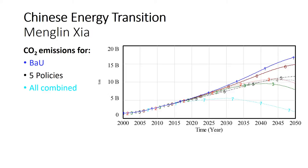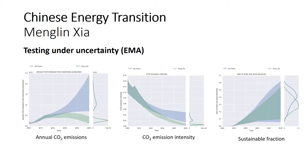He then performed an uncertainty analysis using the EMA Workbench. For each uncertain parameter he set a range of expected values and ran a large number of simulations. The annual CO2 emissions on the left are quite uncertain without policies, but can be reduced with some certainty when policies are applied. The same holds for CO2 emission intensity. On the right, the sustainable fraction shows large uncertainty, possibly because some policies — like carbon capture and storage — achieve CO2 reductions without increasing the sustainable share.